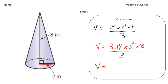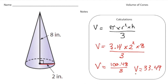When I do pi times 2 squared times 8 — remember you have to do 2 squared first, order of operations — I get 100.48. Then I take that number and divide it by 3, and I get 33.49. We're not done because we need labels. Anytime we're talking about volume it's cubed, so the answer is 33.49 cubic inches. Now pause the video and try your own problem — when you're done hit play to see how you did. Good luck!